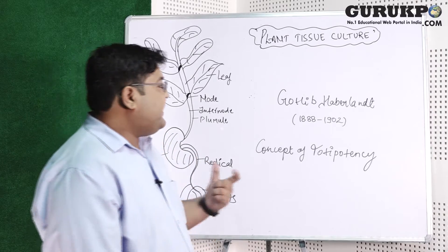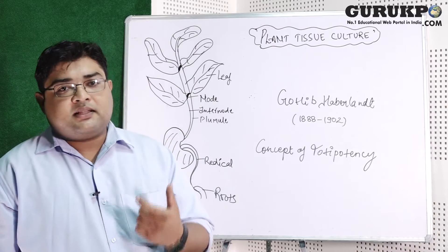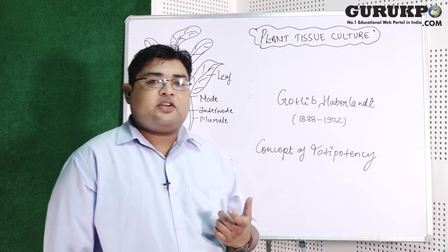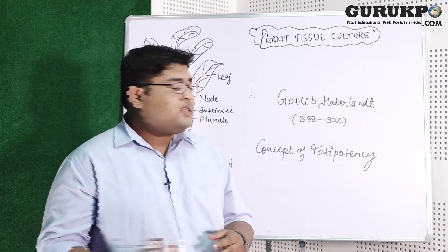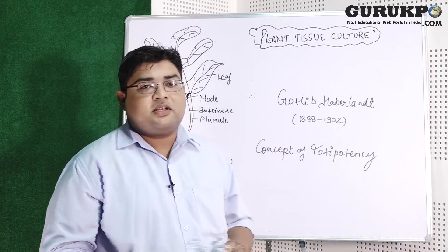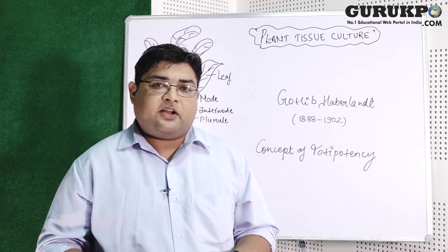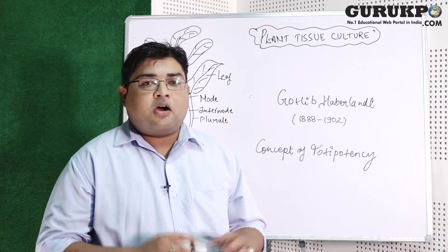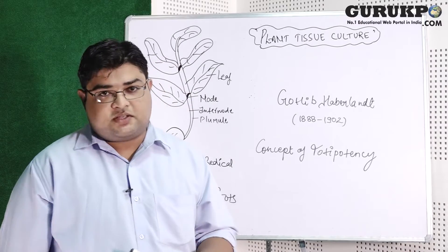He found that some plant cells are able to synthesize starch under in vitro conditions inside the laboratory. He also explained the term totipotency — that is, the ability of any cell to generate a whole plant. From this concept, plant tissue culture came into the field of plant biotechnology.